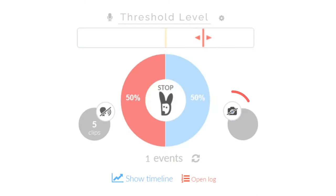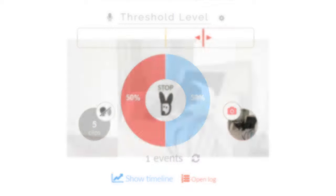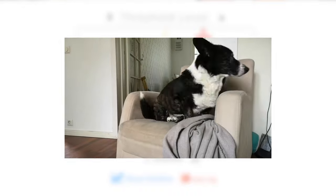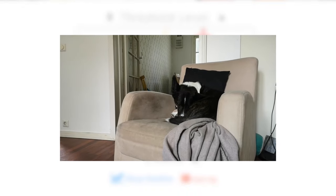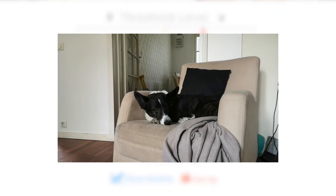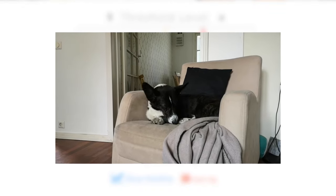Remember to enable the camera to see what your dog is doing, rather than relying only on the audio. The camera will record a time lapse video of the entire day, allowing you to see what your dog is doing while they're quiet.